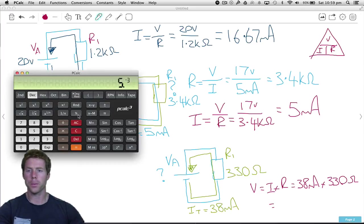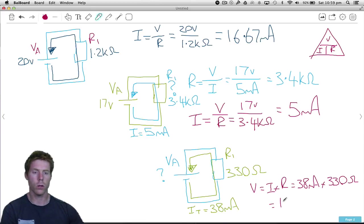Let's bring up our calculator. 38 milliamps so 38 exponential change sign 3 to get 38 milli. And we need to multiply that by our resistance which is 330 ohms. And the power supply is 12.54 volts. 12.54 must be our power supply voltage.